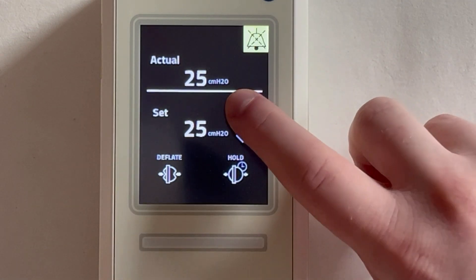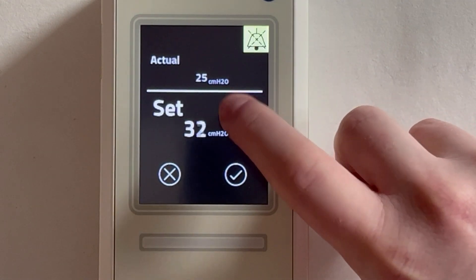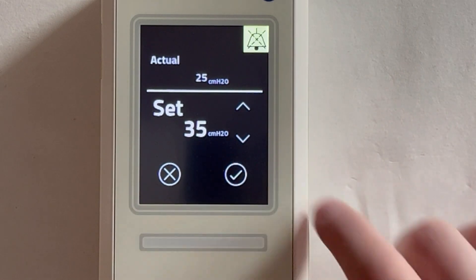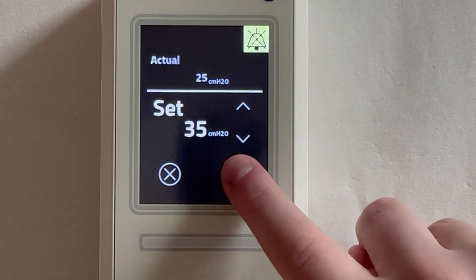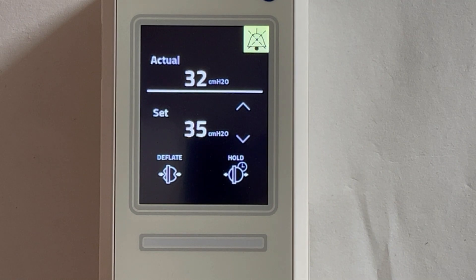To increase the cuff pressure, press the arrow up until the desired cuff pressure is reached. Once the desired cuff pressure is reached, press the accept button. Now the device will increase the cuff pressure.